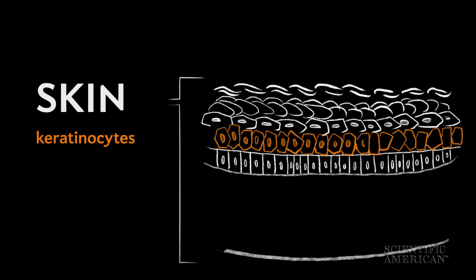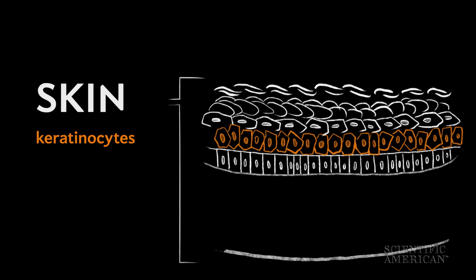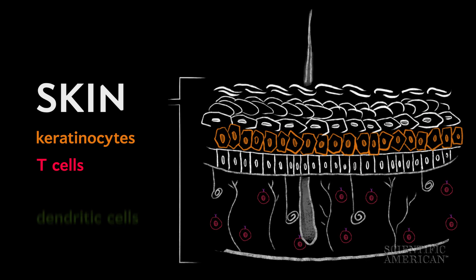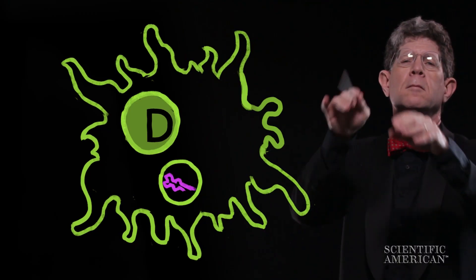Epithelial and keratinocyte cells line the outside of the skin. Beneath are nerves, sweat glands, hair follicles, and immune system cells, including dendritic cells.